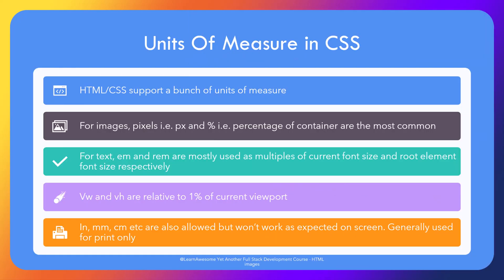Width and height are generally specified in units of pixels. There are a bunch of supported units of measure in HTML and CSS. The most common ones are px or pixel and percentage for images, em or rem for text, and vh or vw for viewport-specific CSS. Though inches, millimeters, and centimeters are also possible values, avoid them unless you are doing a print-specific task, otherwise you would not get desired results on screen.